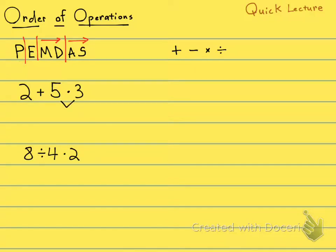So I need to multiply first. 5 times 3 is 15. So now I have 2 plus 15, which is 17. That's the correct answer. Much different than what we had, 21, if we would have done it incorrectly.